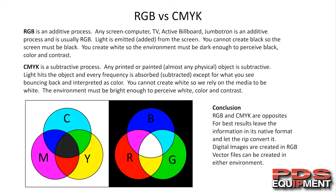God made some amazing things — we have a few plants and animals out there that actually produce their own light. But with those few exceptions, the real-world printed, painted, physical objects are all subtractive. Light hits the object and every frequency is absorbed or subtracted except what you see bouncing back, interpreted as color. You cannot create white, so we rely on the media to be white. The environment must be bright enough to perceive white color and contrast. In conclusion, RGB and CMYK are opposites. For the best results, leave the information in its native format if possible and let the RIP convert it. Digital images are always created in RGB; vector files can be RGB or CMYK, but when we print it, it's always going to print CMYK.